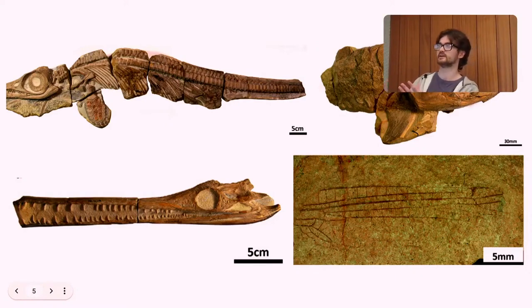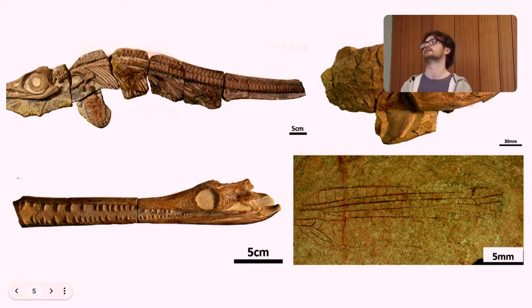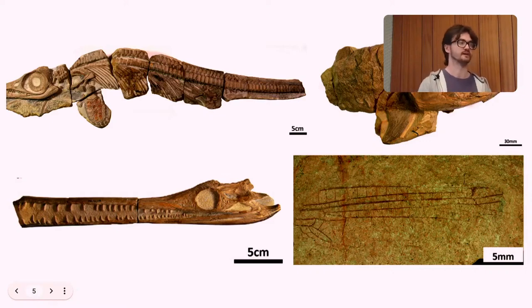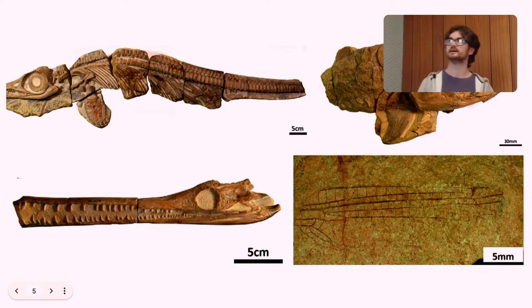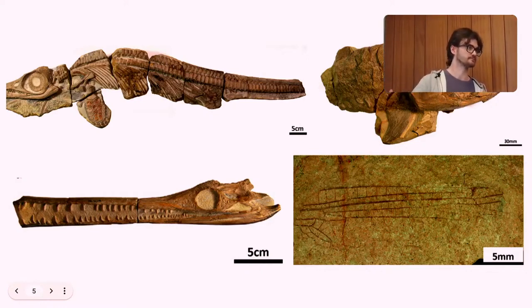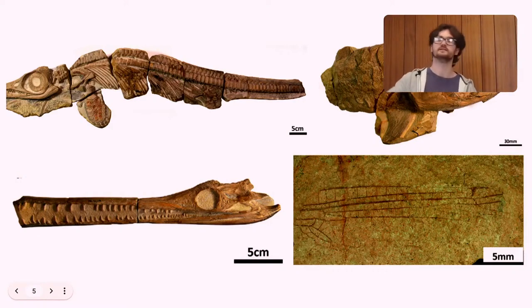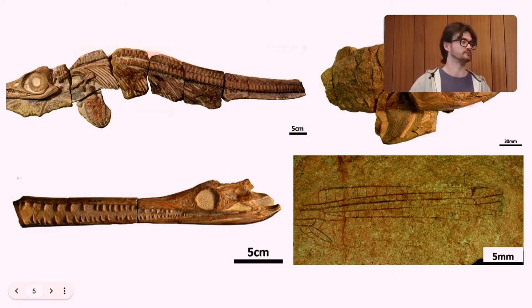So the type of preservation that you get at Strawberry Bank is really unlike anywhere else in Europe for the time period it represents. There's soft parts preserved, lots of 3D preservation, because they're found in these calcareous nodules. And something cool about Strawberry Bank is that none of the marine reptiles found there are adults. They're all just a mixture of juveniles and infants. So that could be a feature of preservation bias, but more likely, it seems, that Strawberry Bank represents a kind of nursery for marine reptiles. It was very close to shore, indicated by these insect fossils that we find. And so it seems that the water was shallow enough that big ocean predators couldn't get that far in. So these young marine reptiles were safe.